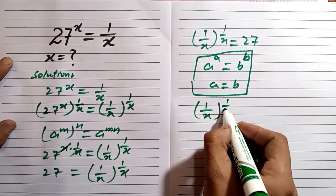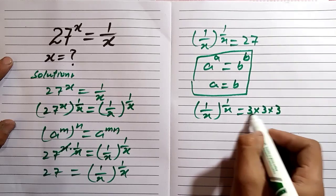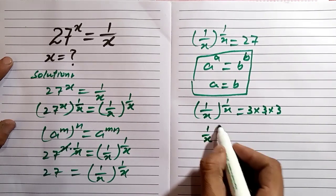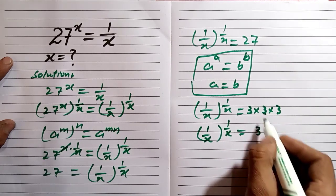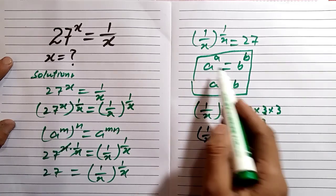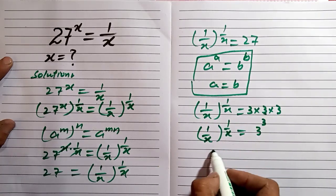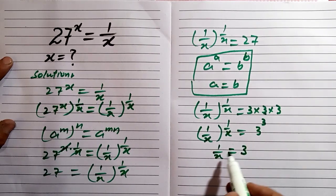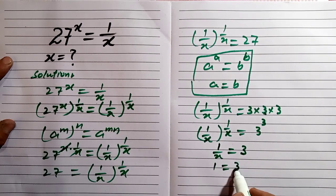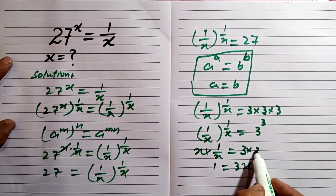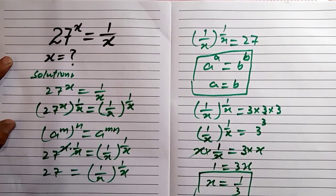So we have (1/x)^(1/x) on one side, and we can write 27 in power form as 3^3. Using the rule a^a = b^b implies a = b, we compare: 1 over x equals 3. From 1/x = 3, we get 1 = 3x, and multiplying x on both sides gives x = 1/3. That is our final answer.